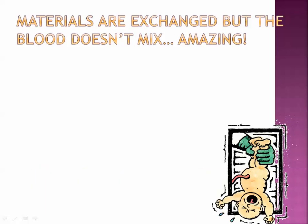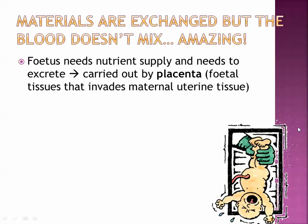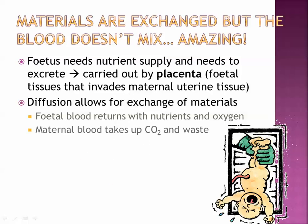The placenta is addressed in another one of the videos, but the key thing is it is tissue that belongs to the fetus — it grows and invades the maternal uterine tissue. It's a really complex structure that allows things to be exchanged between the mother and the baby: for waste materials to go from the fetus to the mother and for nutrients and oxygen to come from the mother. The blood doesn't mix, which is why moms and their babies can have different blood types.